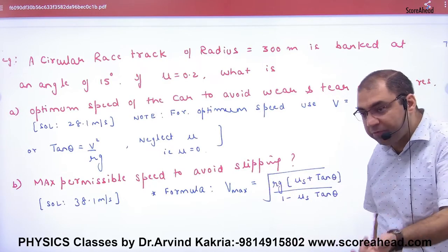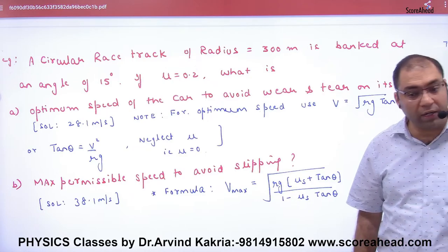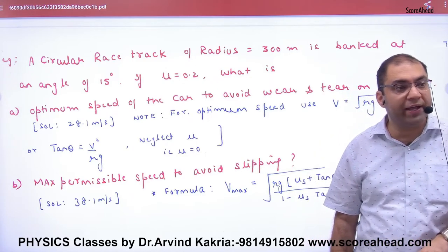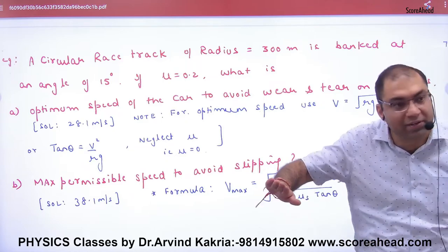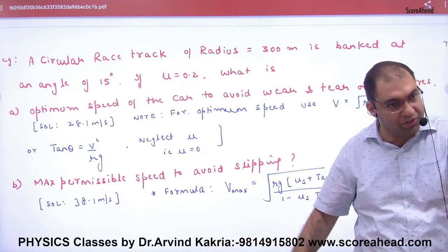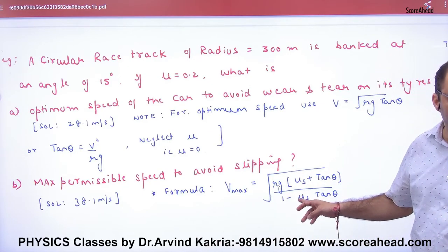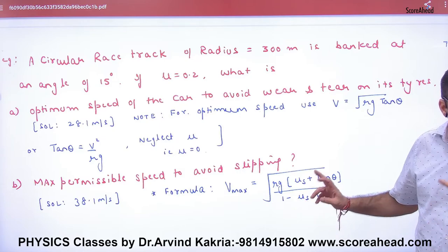The other part is maximum speed, so slipping. Now I'll run friction. I'll run this formula. Without friction this formula.